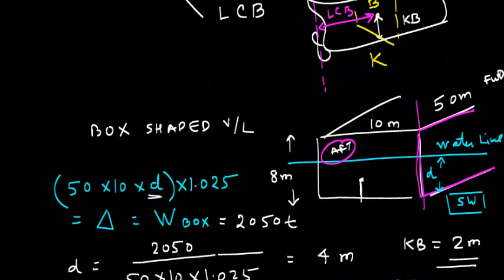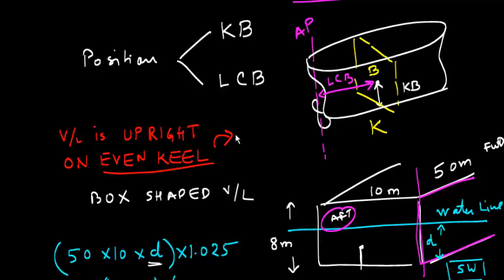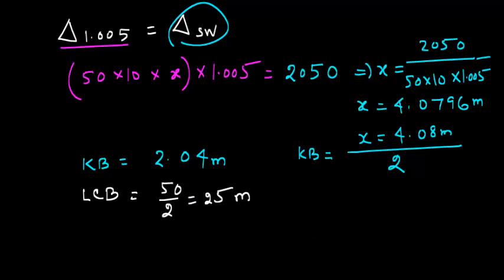It should also be noted that in these cases, whether this example or this other example, the vessel is upright. That means she is not listed or inclined, and the vessel is on even keel. That means there is no trim. Even keel means zero trim. So this problem can be solved only when we are having these two considerations. And of course, the vessel is floating in still water.